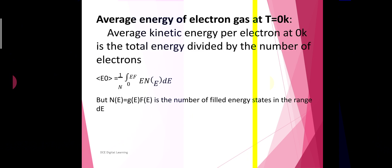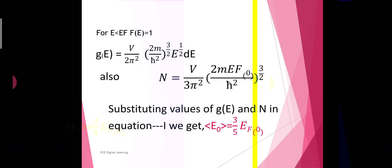Next is the expression for the average energy of the electron gas at absolute zero. The average kinetic energy per electron at absolute zero is the total energy divided by the number of electrons. Mathematically, the average energy ⟨E⟩₀ = (1/N) ∫₀^Ef E·n(E) dE, where n(E) dE = g(E)·f(E). For E less than Ef, the Fermi-Dirac distribution function f(E) = 1.